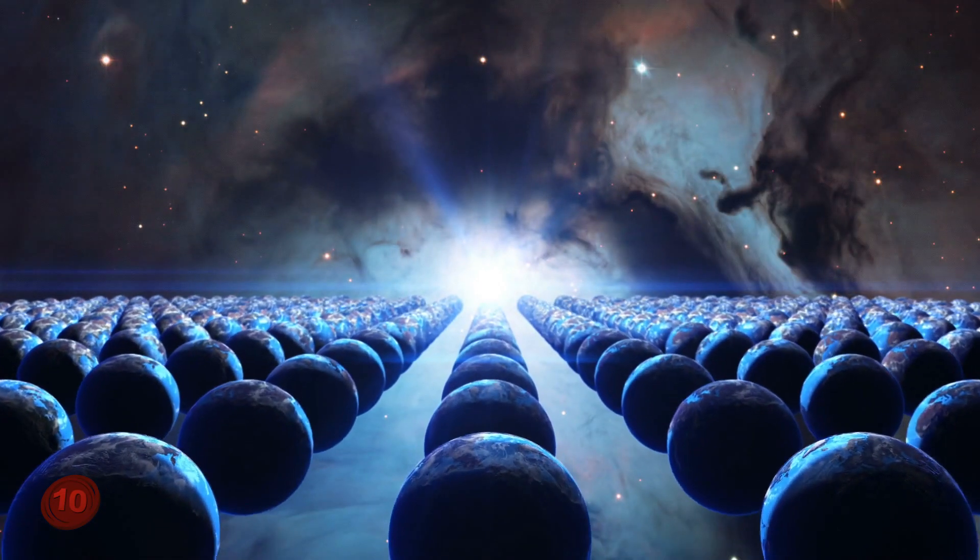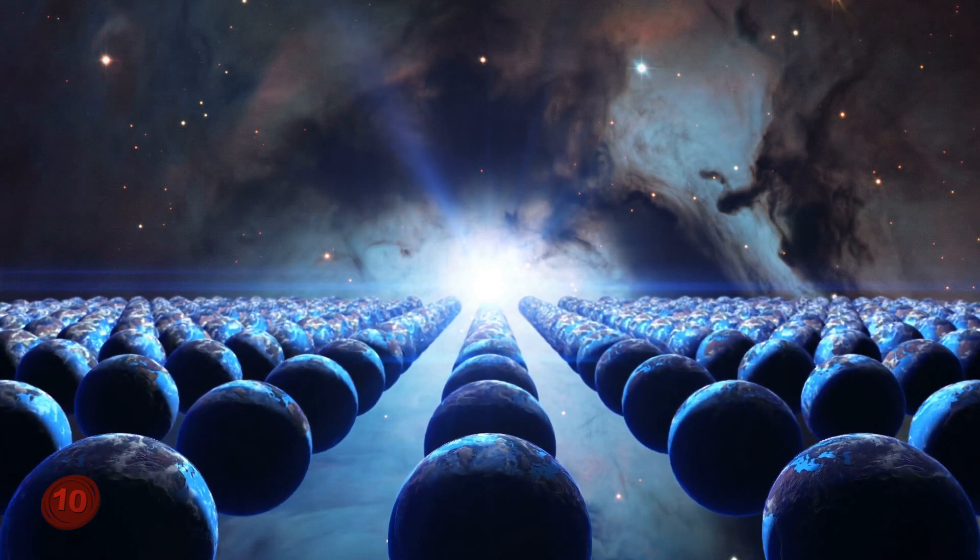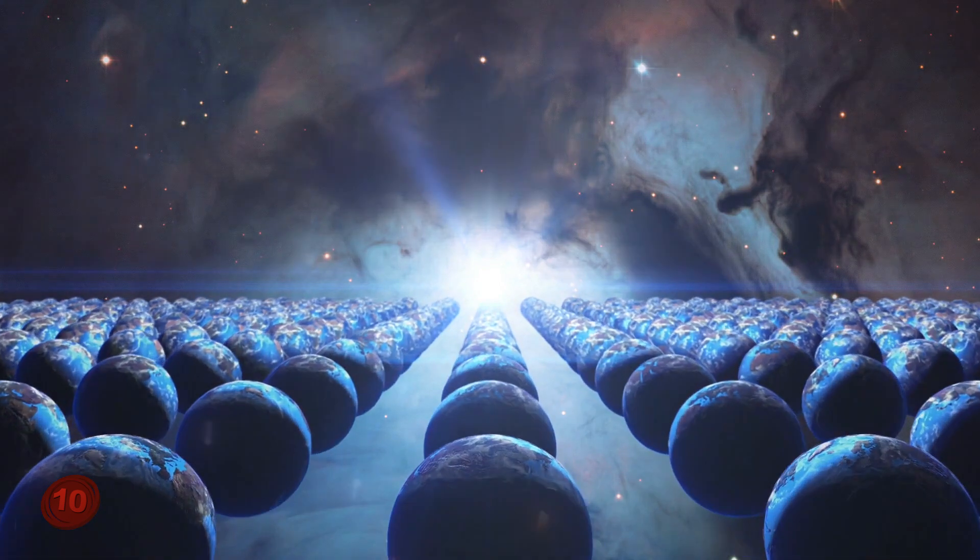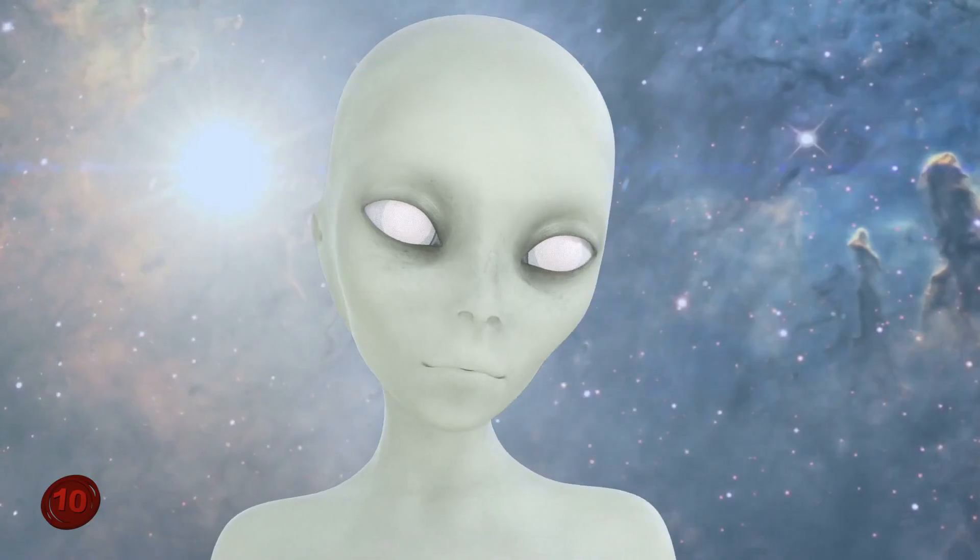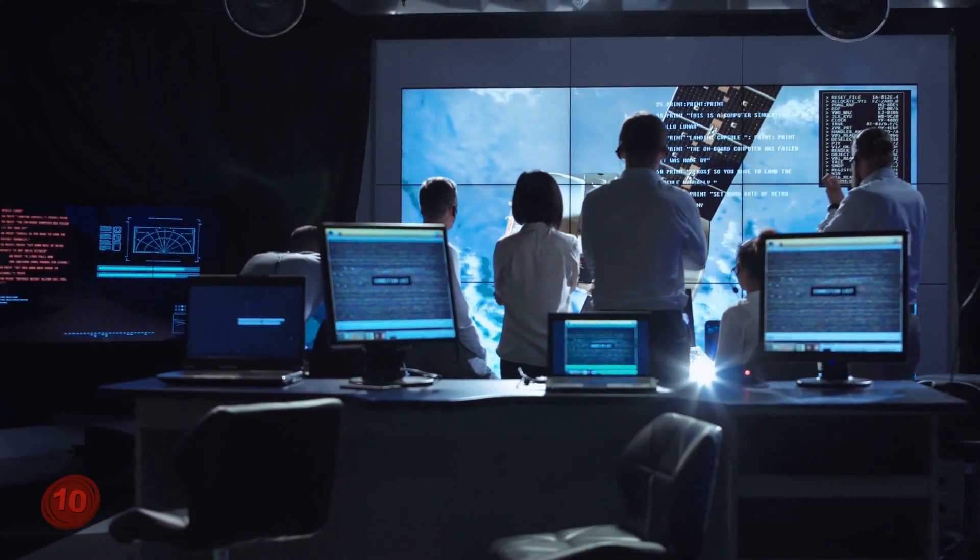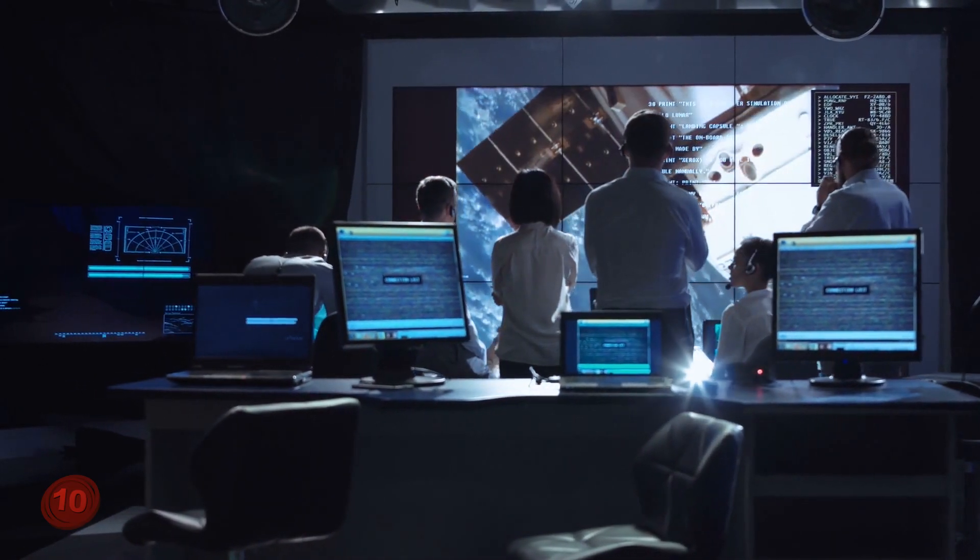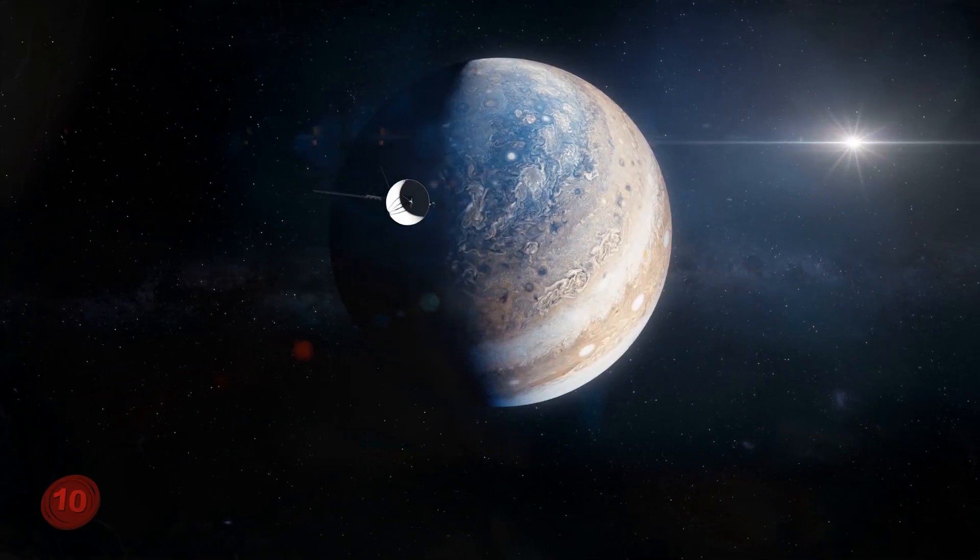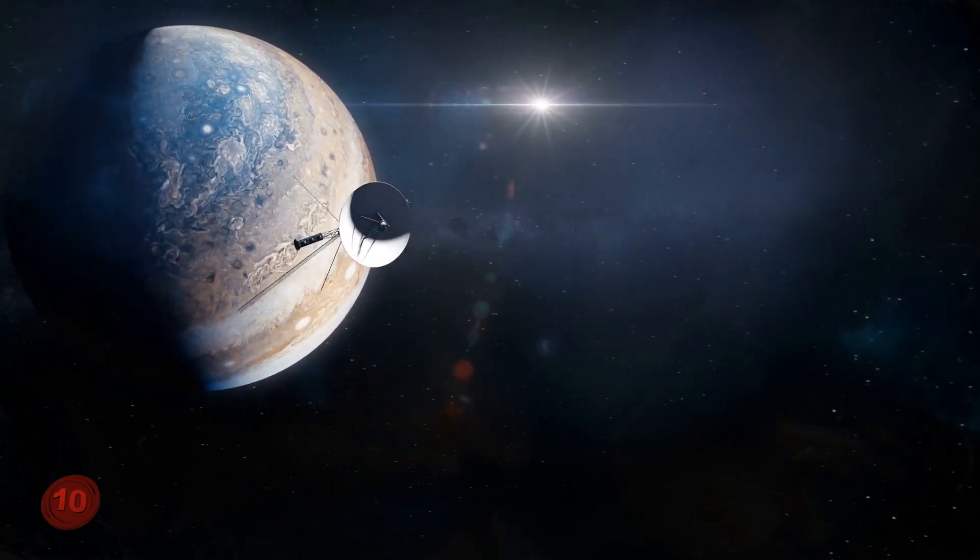Given the vast expanse of the universe, and the fact that we know there are planets out there like Earth where the conditions are right to breed life, it goes to reason that there could indeed be another humanoid species out there. Depending on distance and their state of evolution, it could explain why we haven't been able to find them, contact them, or even locate a trace of them.